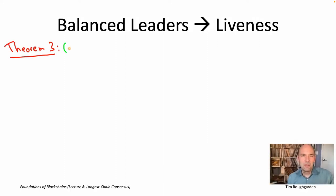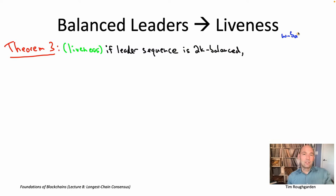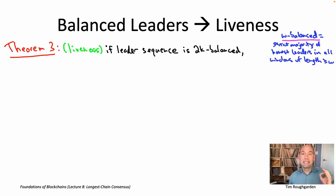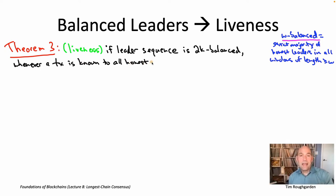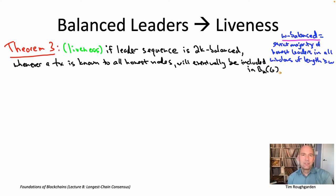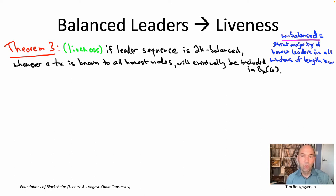In this video, let's talk about the final property we're going to prove about longest chain consensus, again under this balanced condition on the leader sequence, namely liveness. Under the balanced condition, it will be the case that any transaction which at some point is known to all of the honest nodes is guaranteed to eventually be finalized — guaranteed to show up in a longest chain extended by K or more blocks.